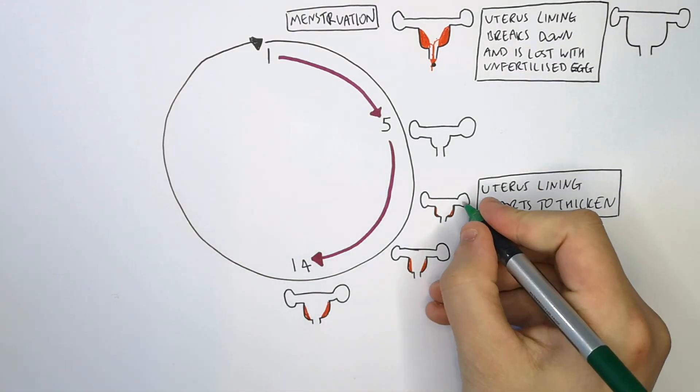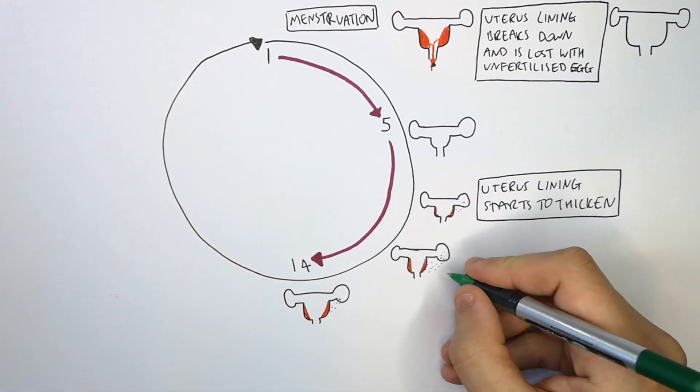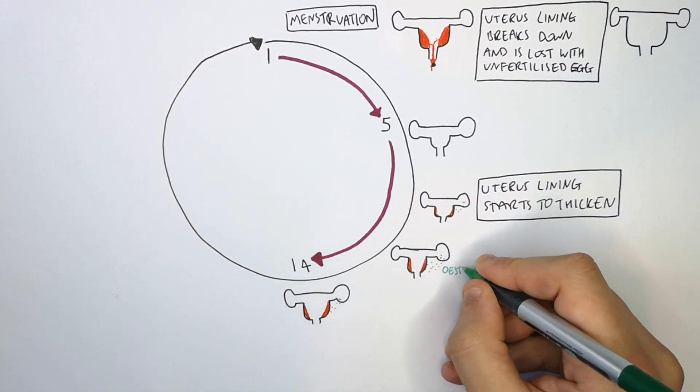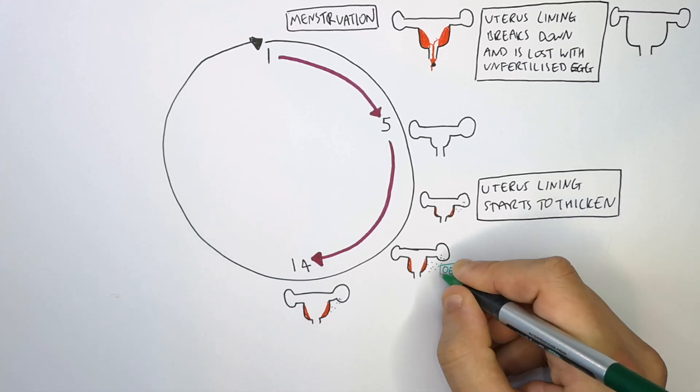It is oestrogen that is produced and secreted from the ovaries. The oestrogen goes to the blood lining in the uterus and it causes it to thicken.